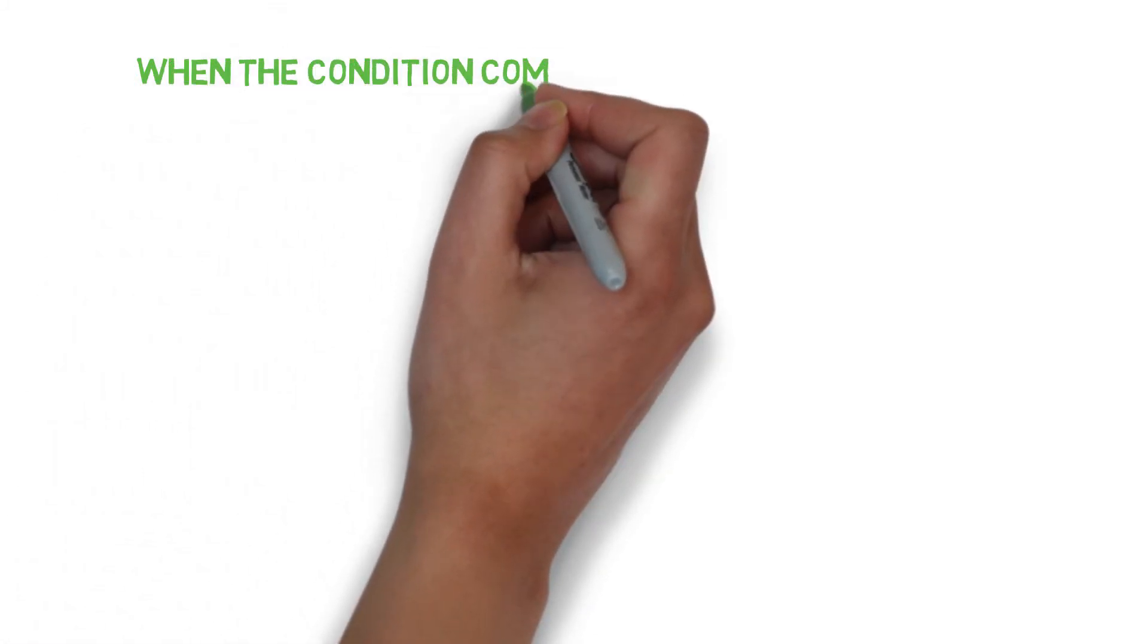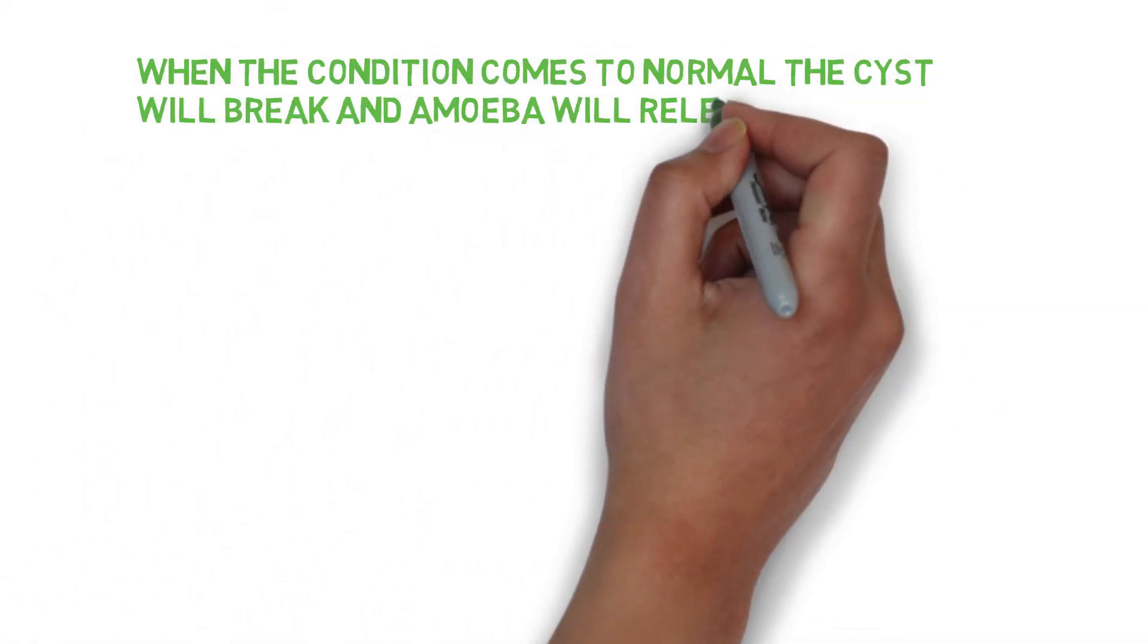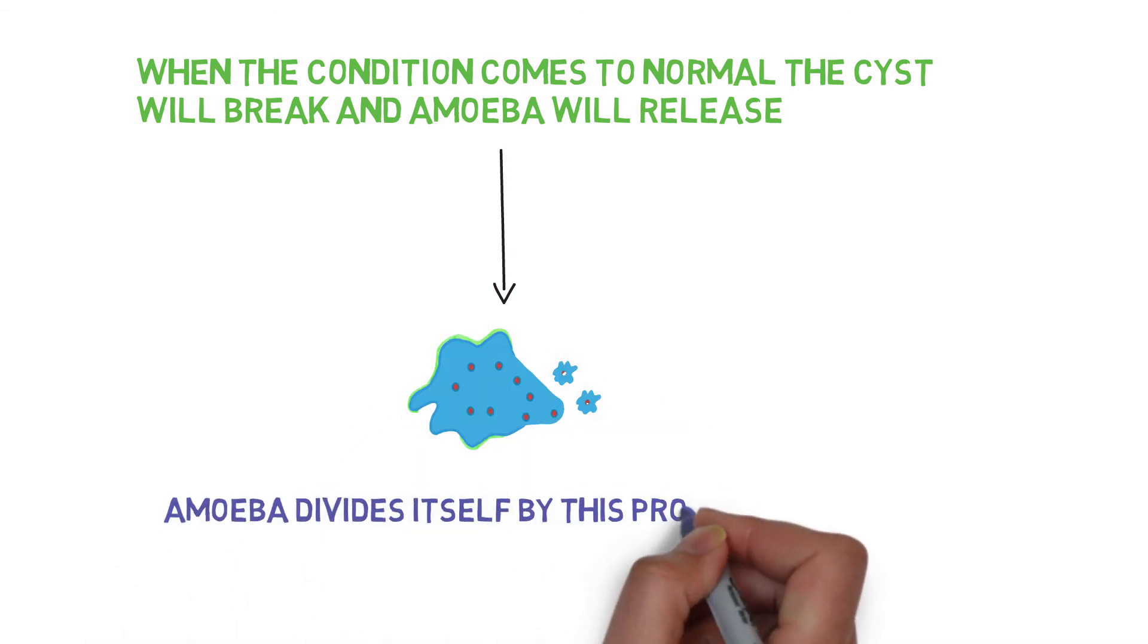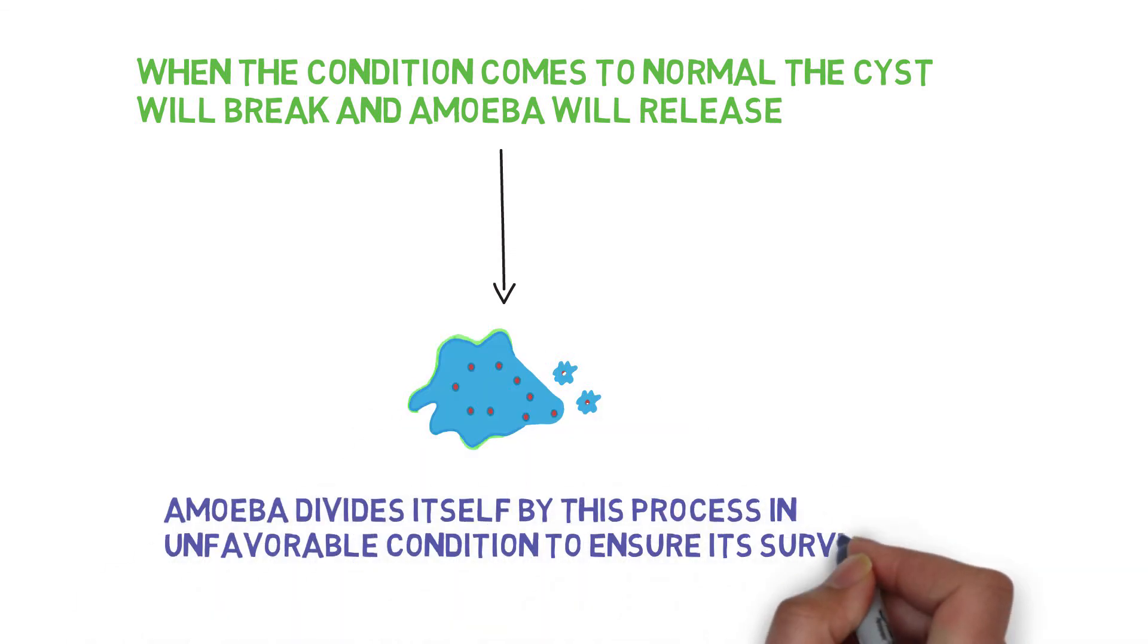When the condition comes to normal, the cyst will break down which will release amoeba. The amoeba divides itself by this process in unfavorable conditions to ensure its survival.